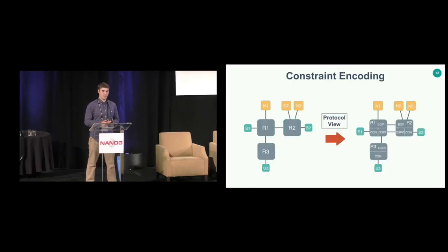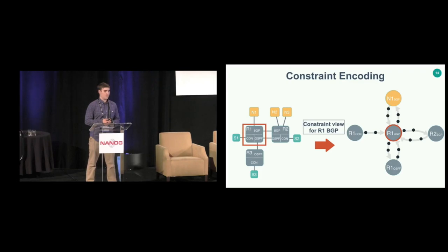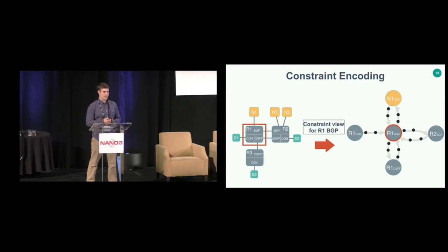Technically, for a network with three routers R1, R2, and R3, we first deconstruct it into what I call a protocol view — each router is split into its constituent protocols. For example, R1 might be running BGP connected to neighbor R2 and an external peer N1, and also running OSPF with other neighbors. We then refine this further by zooming into a particular protocol — the constraint view of the BGP process in R1 — adding arrows between processes to indicate the flow of control plane information. For instance, if connected routes are redistributed into BGP, we add an arrow between R1's connected protocol and R1's BGP protocol.